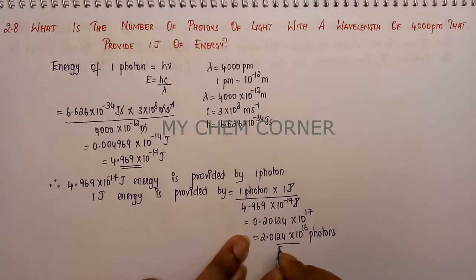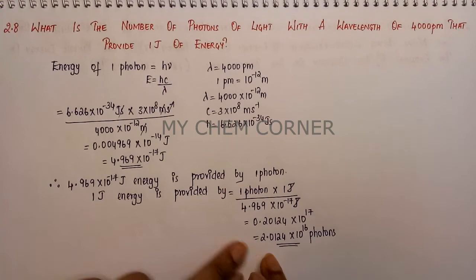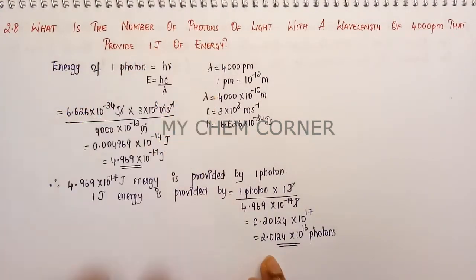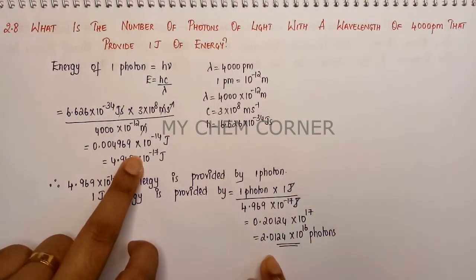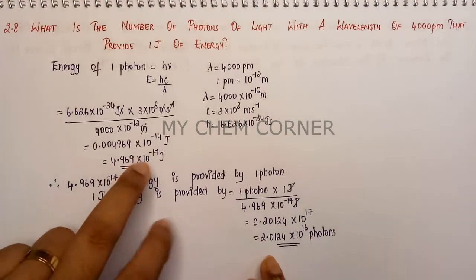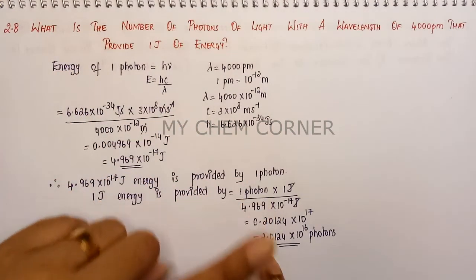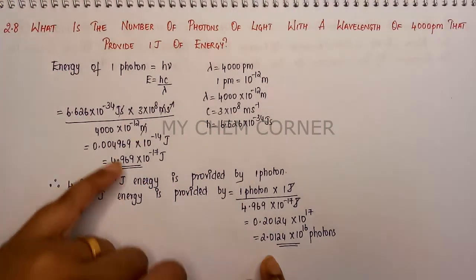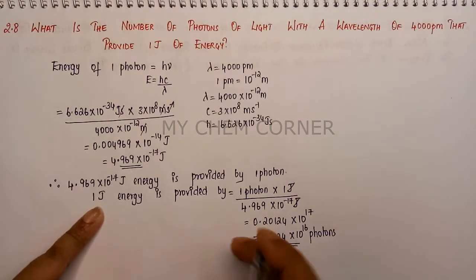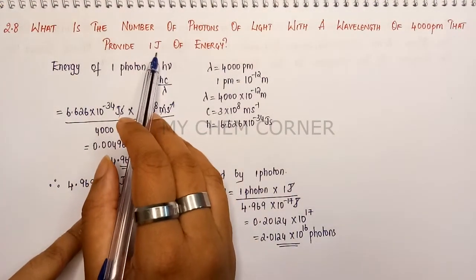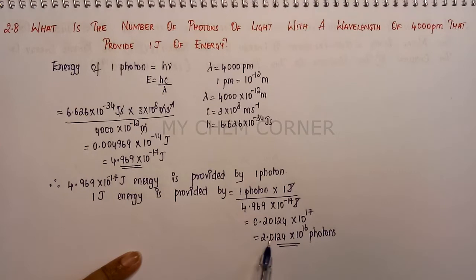So 2.0124 × 10¹⁶ photons are required to provide 1 joule of energy. To summarize: we first calculated the energy of one photon using E = hc/λ, then used the unitary method to find how many photons are needed to provide 1 joule of energy.